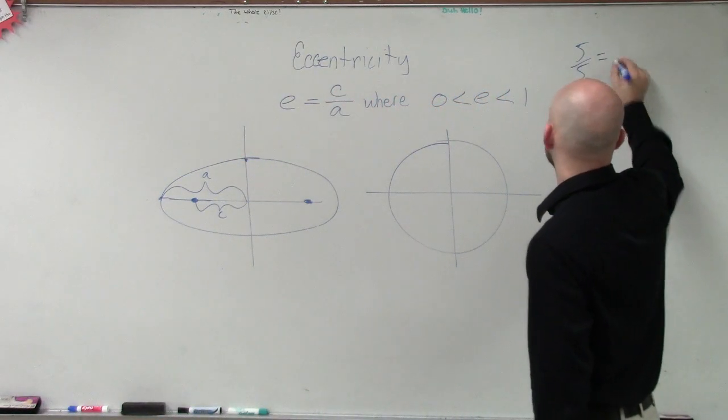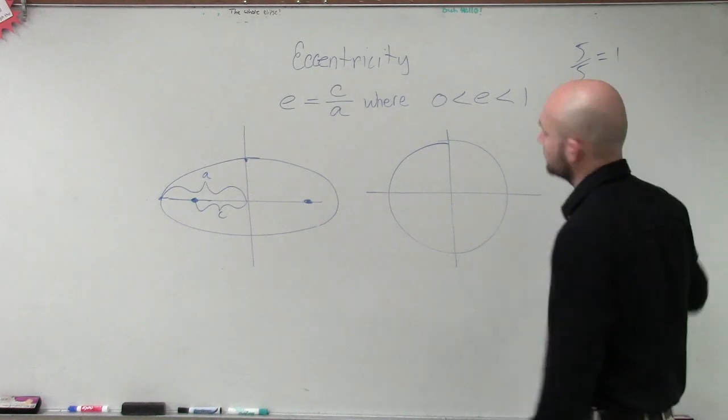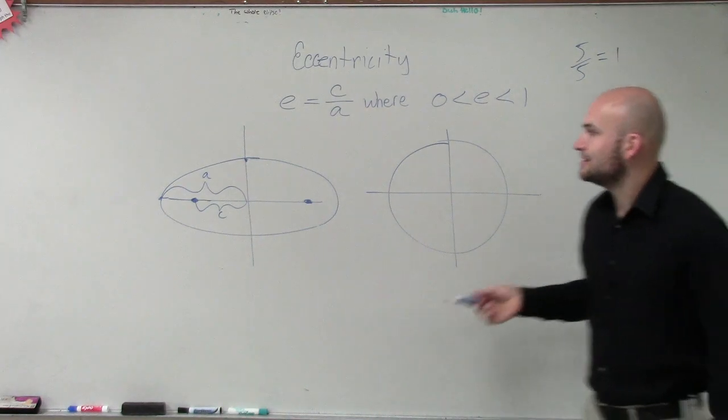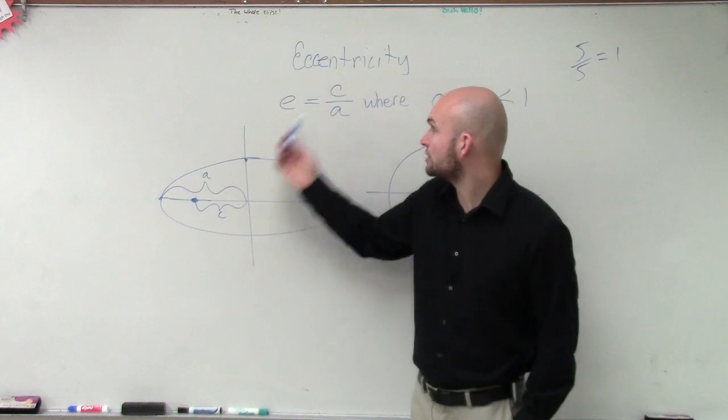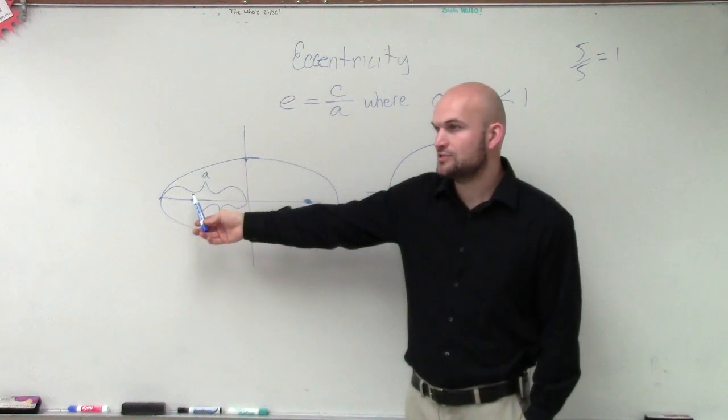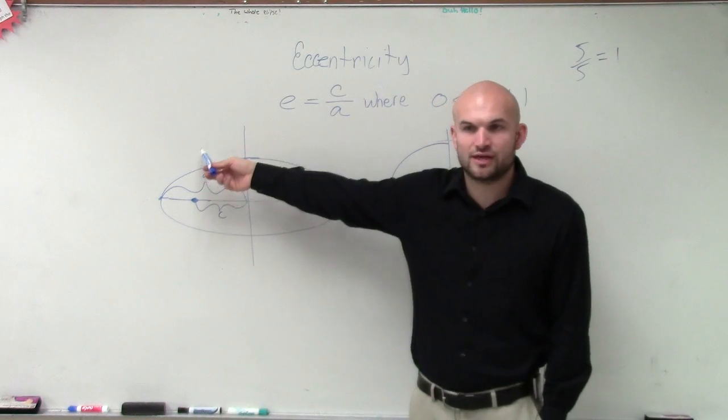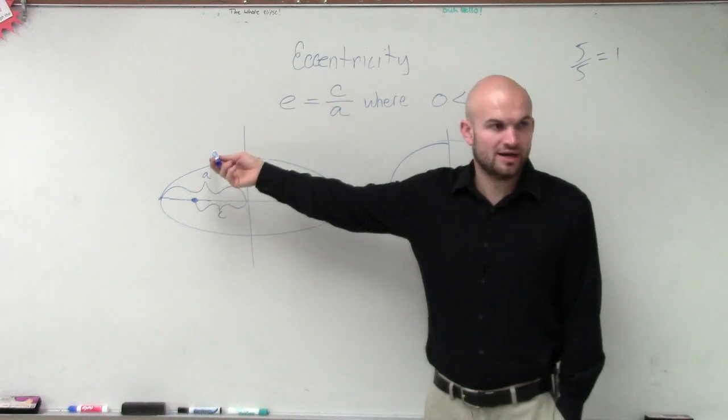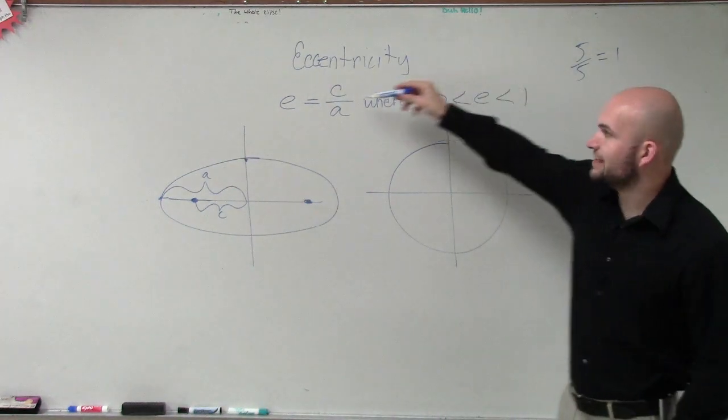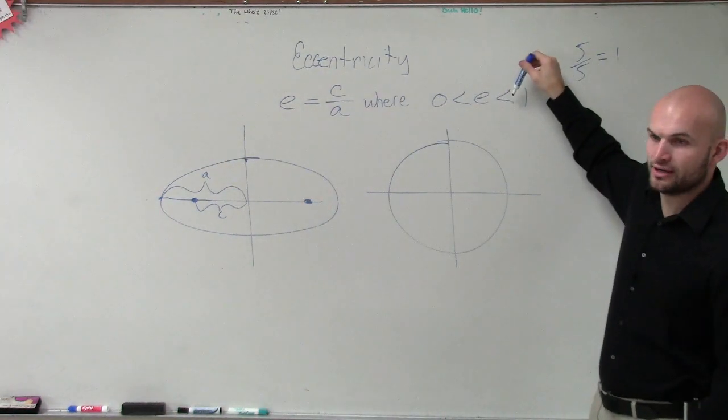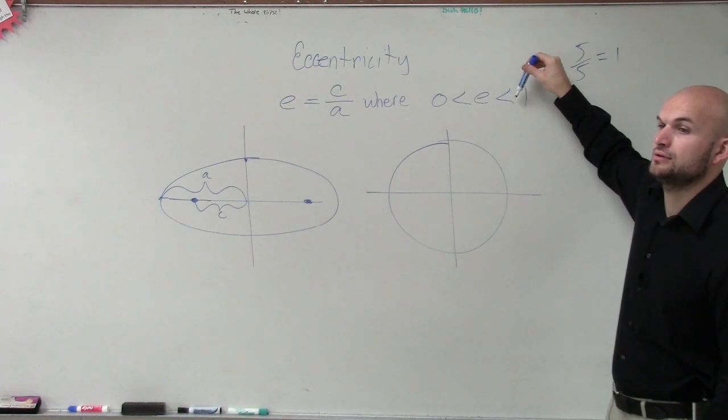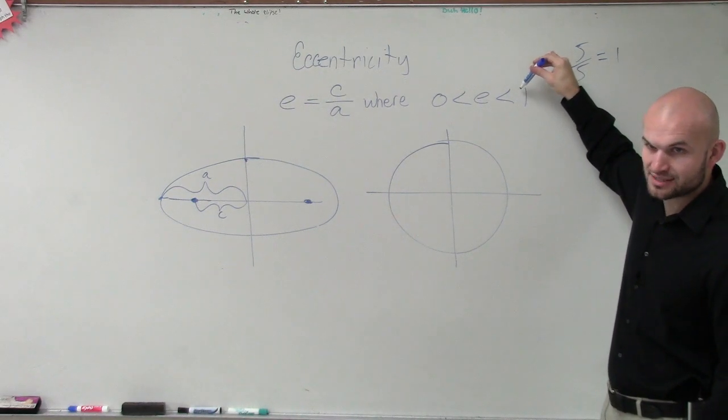Now, remember real quick, if I say 5 over 5, that equals what, 1. So what we're trying to say is, ladies and gentlemen, is it ever possible for the value of c to be exactly equal to the value of a? No. That's why c over a cannot equal 1. It has to be less than 1.